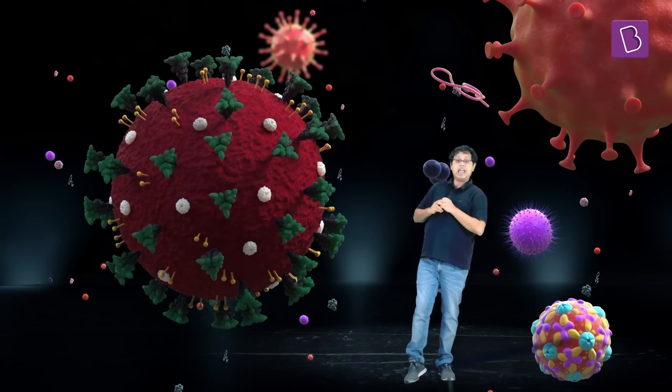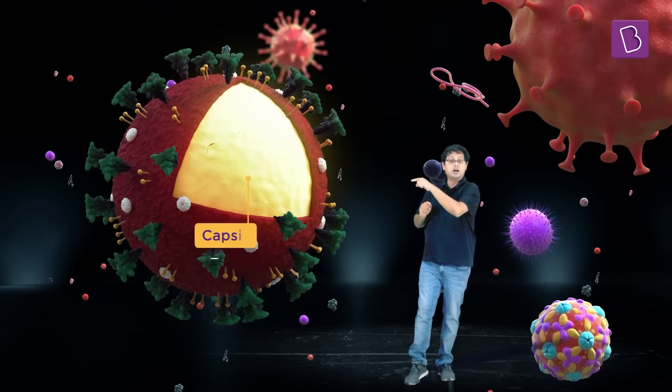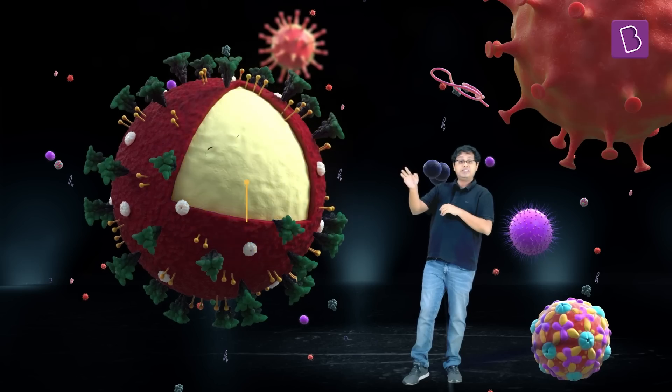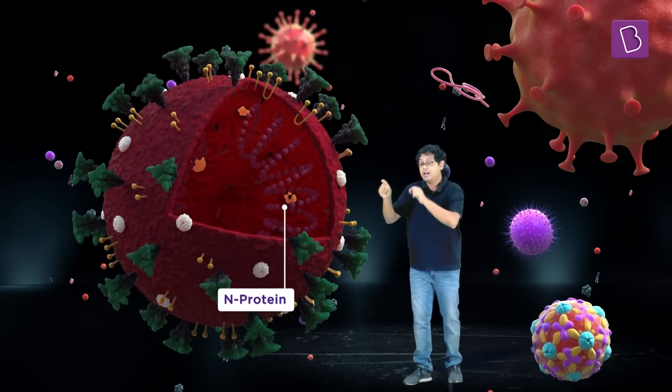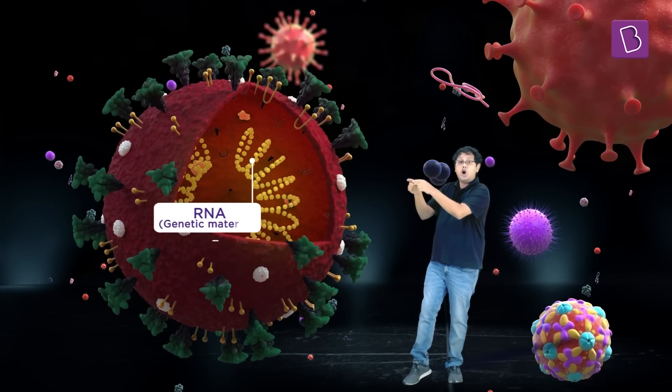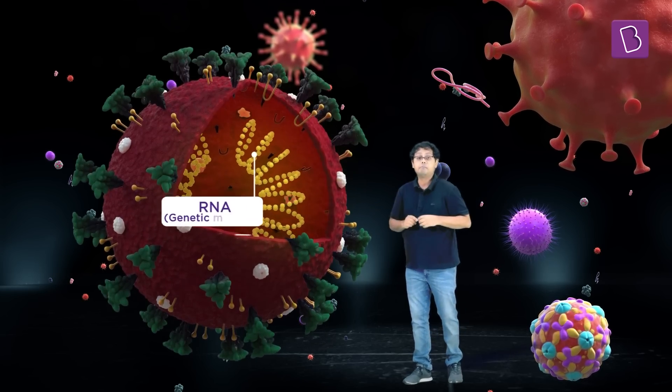Now, strip that envelope, another protein layer called the capsid is present. Strip that, you find the nucleic protein or the N protein onto which RNA or the genetic material is bound.